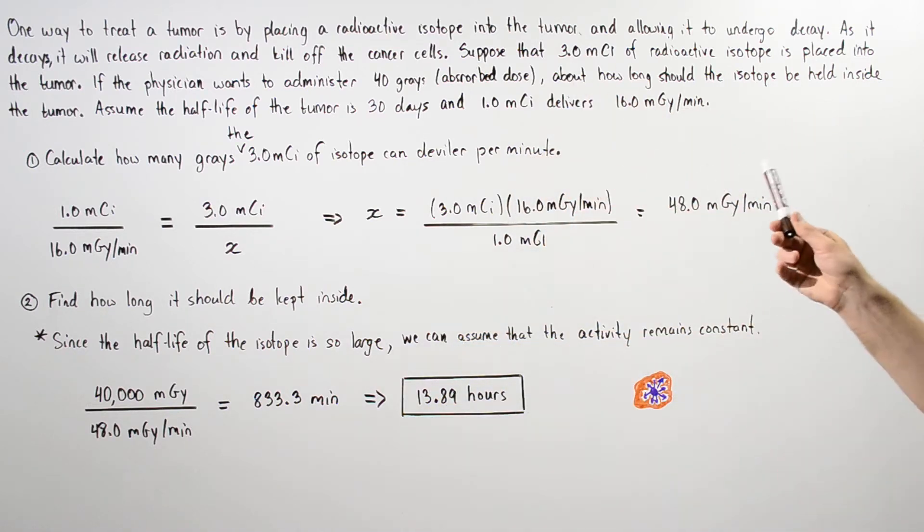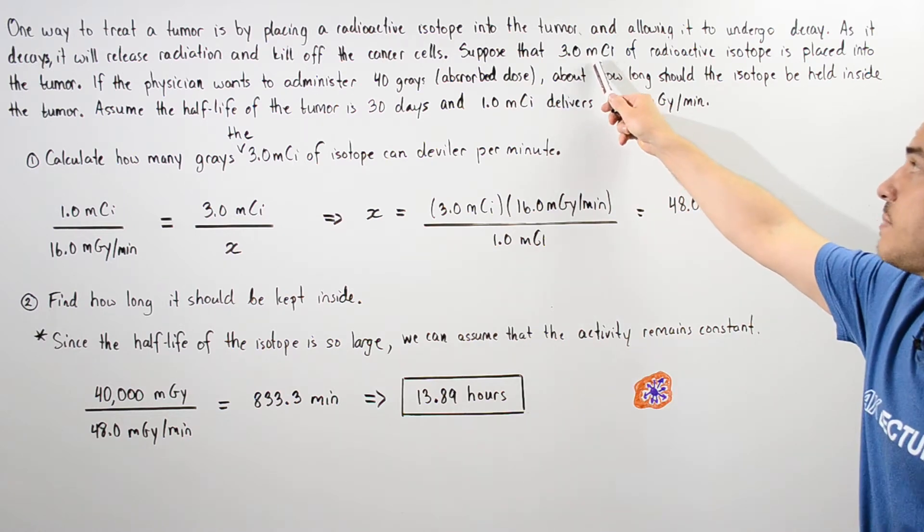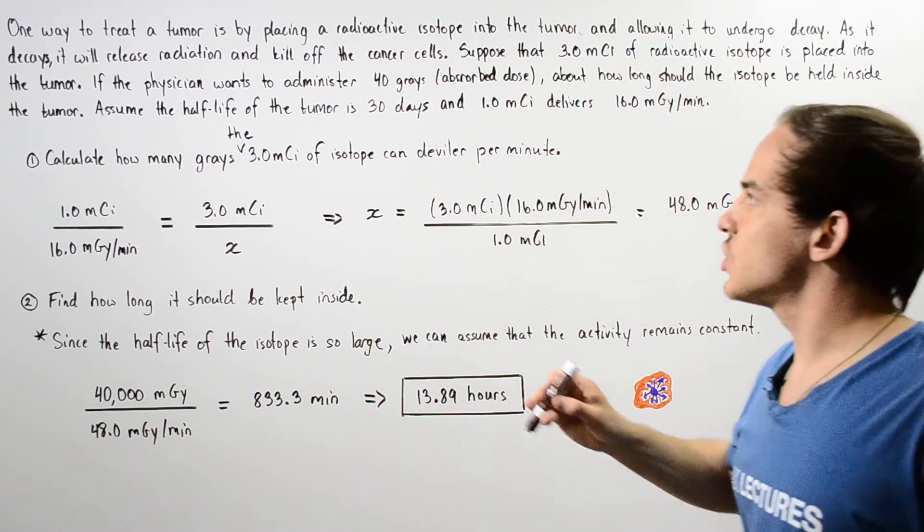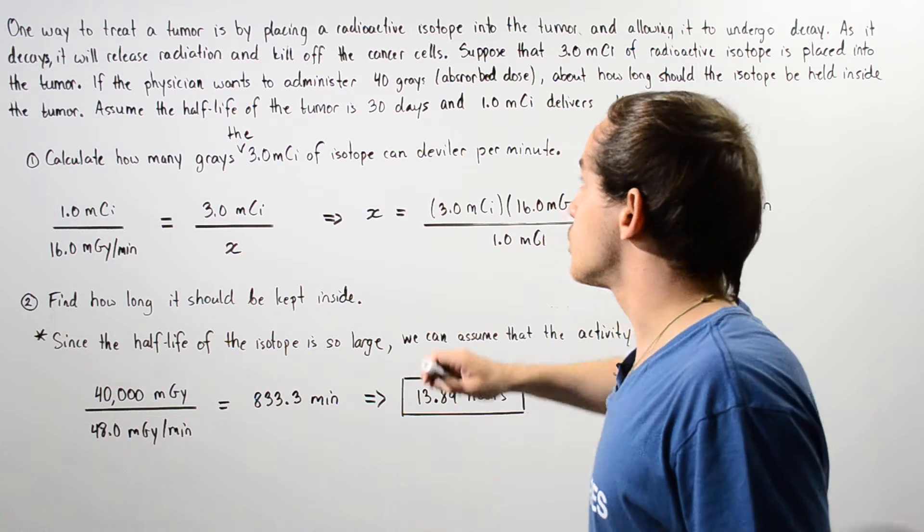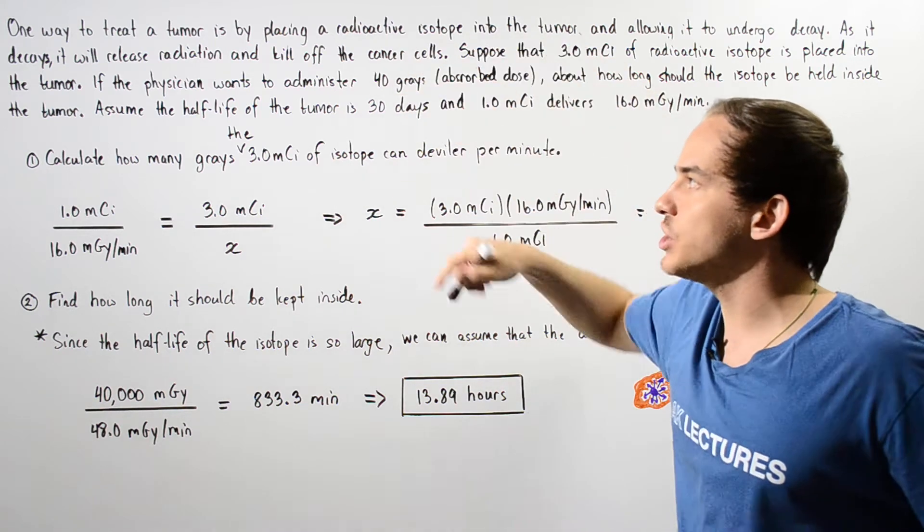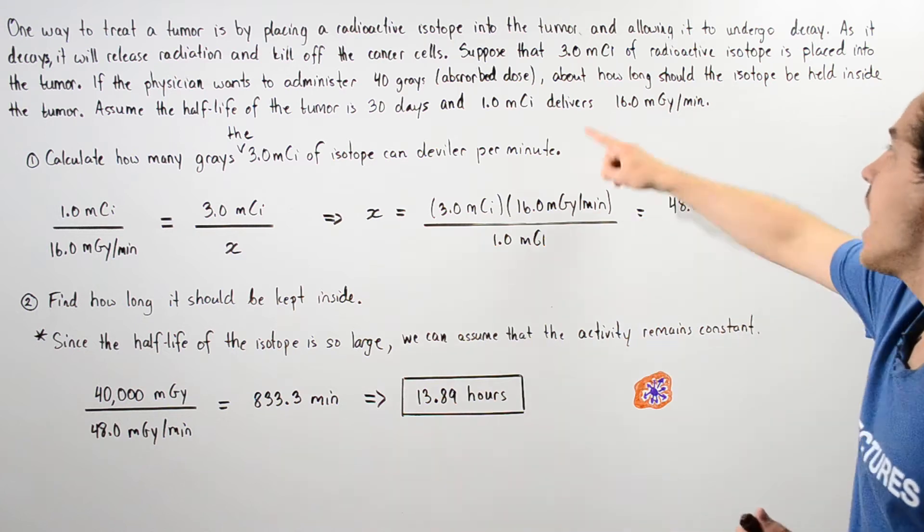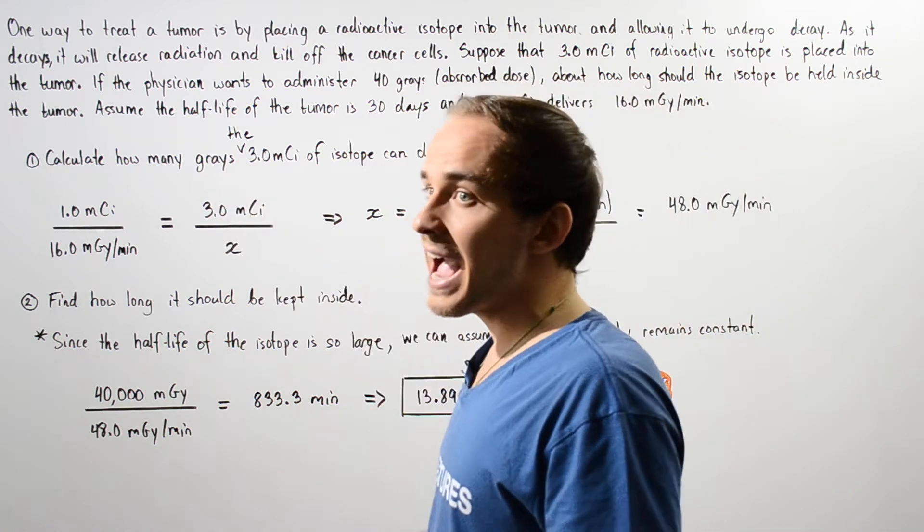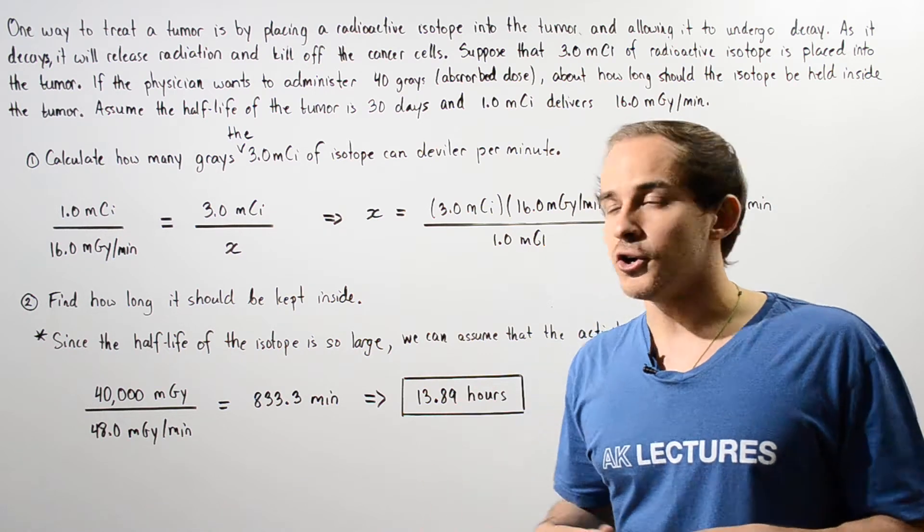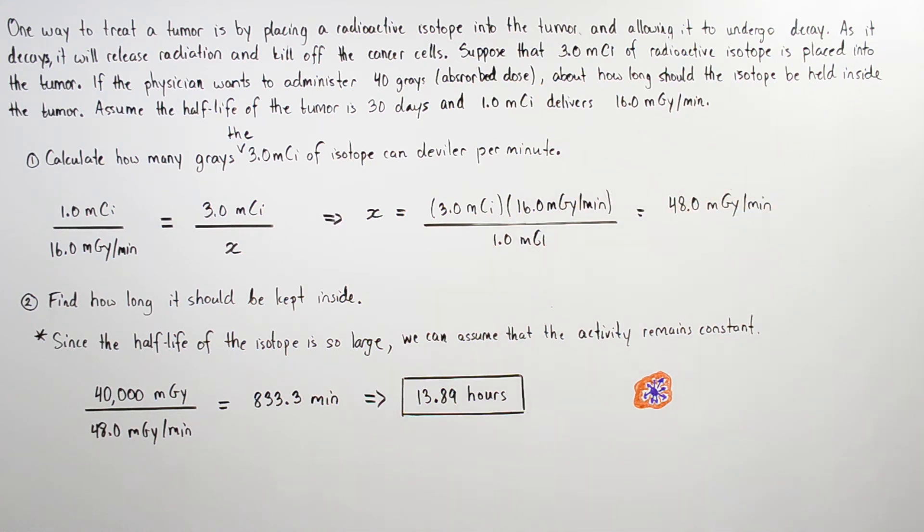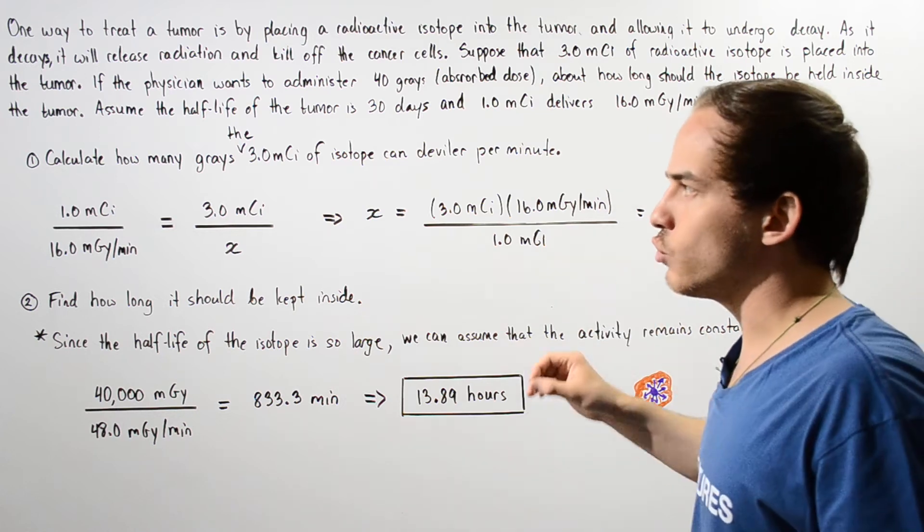Suppose that three millicuries of radioactive isotope is placed inside our tumor. This basically describes the source activity, the activity of our radioactive isotope. If the physician wants to administer 40 grays, this is our absorbed dose. This is how much radiation our tumor should absorb. About how long should the isotope be held inside that tumor? Assume that the half-life of this particular isotope is 30 days and one millicurie is able to deliver 16 milligrays of radiation every single minute into that tumor.